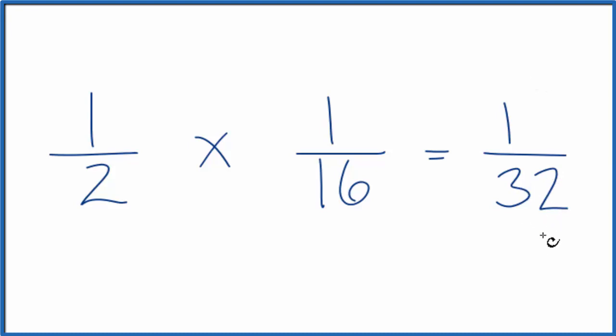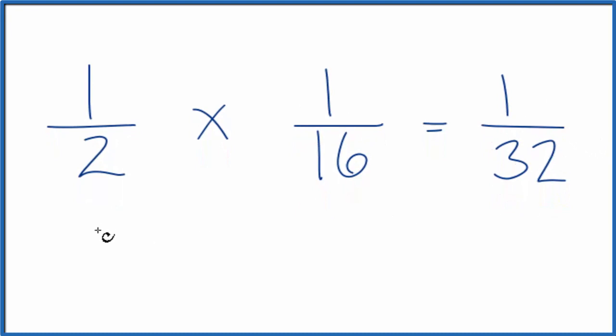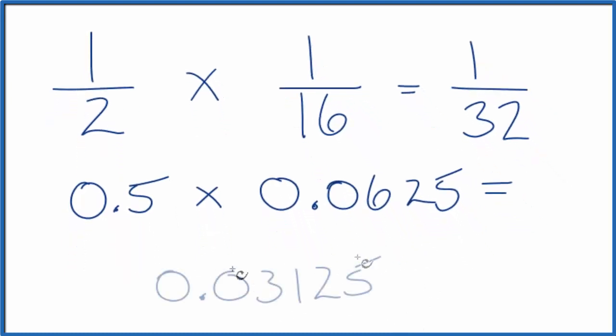We can check our work by using a calculator, figuring out the decimals just to make sure this is correct. One half, one divided by two, that's zero point five. Then one sixteenth, divide one by sixteen, and when we multiply zero point five times zero point zero six two five, we end up with zero point zero three one two five, which is the same number you would get if you divided one by thirty-two.